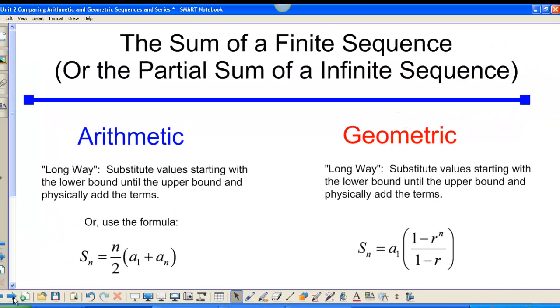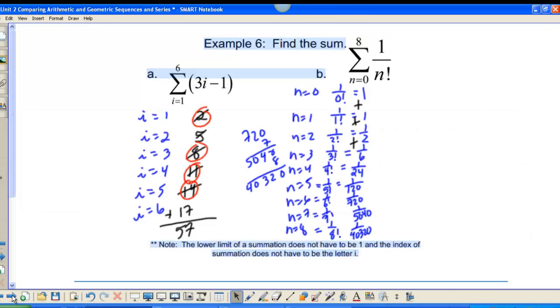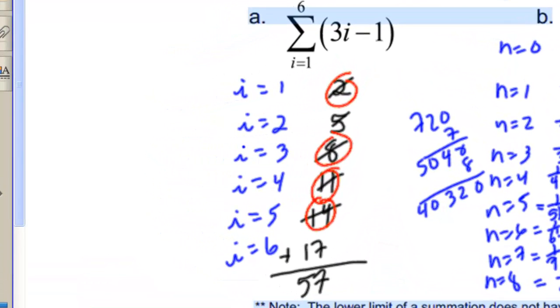We have formulas for the sum of a finite sequence. Another way of talking about the sum of a finite sequence is the partial sum of an infinite sequence. So in both cases, you can find the sum of a finite sequence or a partial sum the long way. And this is what we did in the first lesson. This was an example straight from your notes. In both of these cases, we didn't use any kind of special formula. We noticed that the lower bound on example a was 1 and the upper bound was 6. So we substituted in i was equal to 1, 2, 3, 4, 5, and 6. We got the terms 2, 5, 8, 11, 14, and 17. And then we physically had to add the terms.